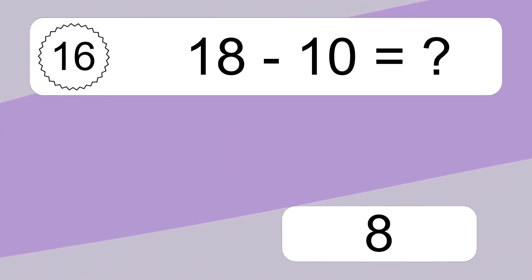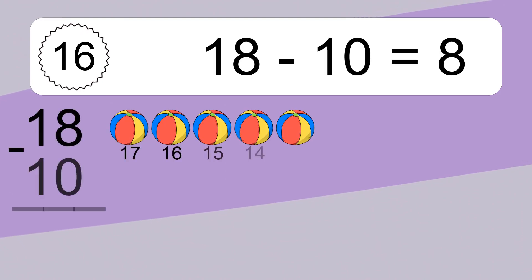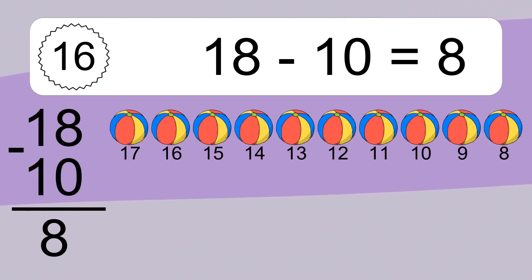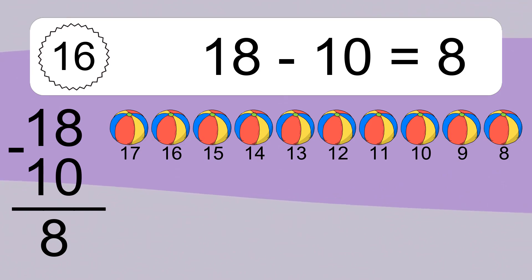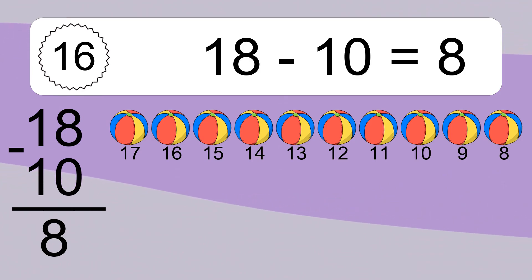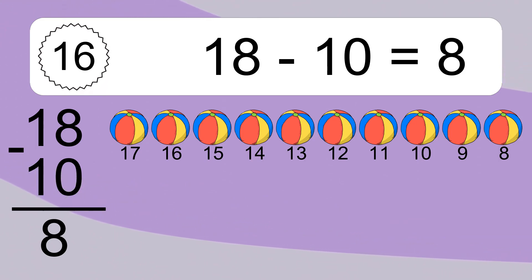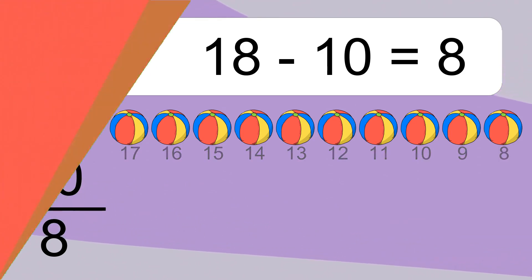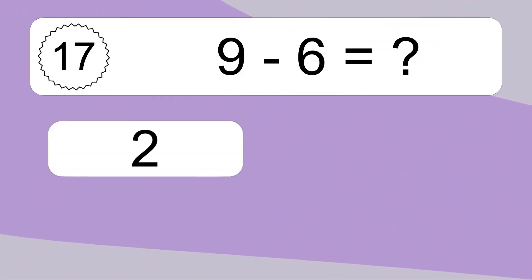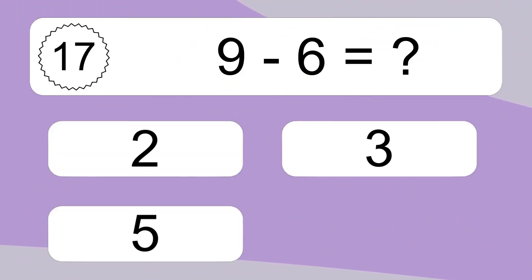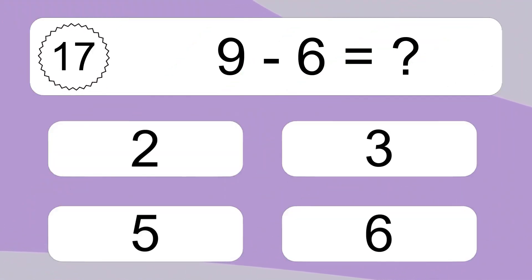18 minus 10 equals what? 18 minus 10 equals 8. Let's count it! 17, 16, 15, 14, 13, 12, 11, 10, 9, 8.